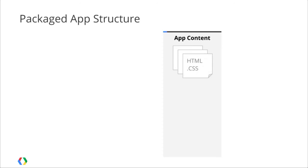Packaged Apps are built using HTML5 just like regular web apps are. You build your content as you normally would — your HTML, your CSS, your JavaScript code, and whatever other assets comprise your app. There are a few things you have to worry about: you can't do inline JavaScript in your script tags, you can't use inline event handlers, things like that. But for the most part, you just build the web app the way you always would.